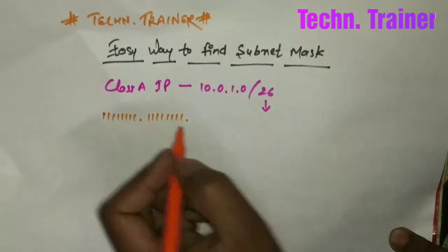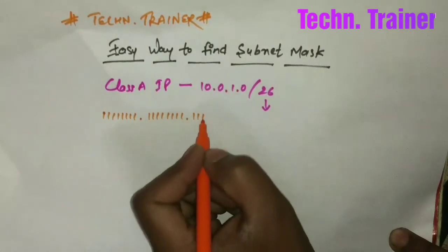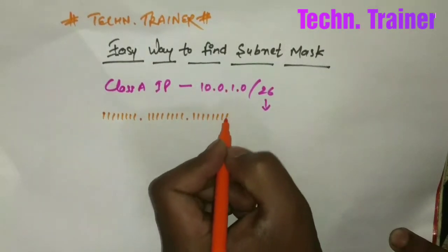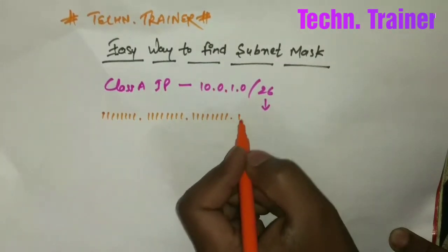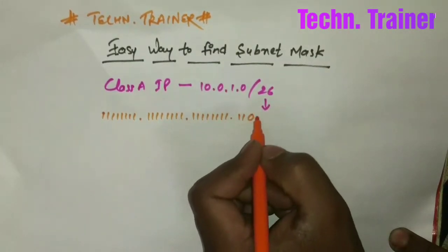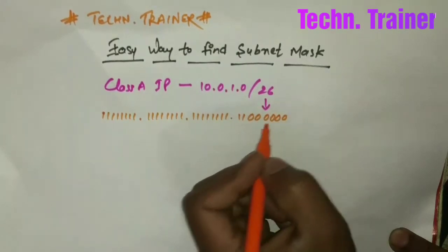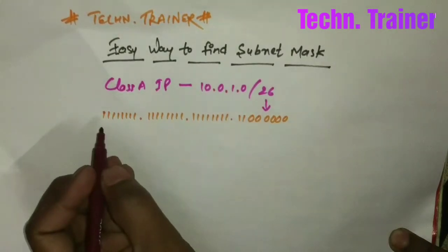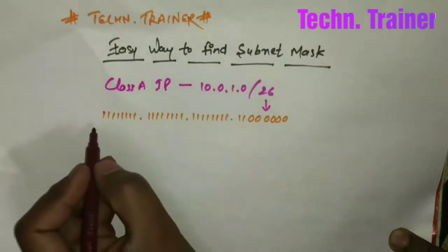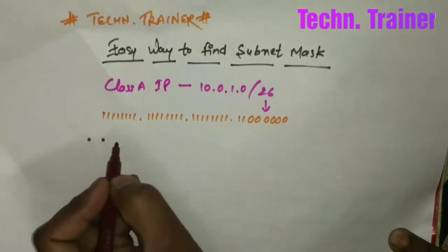So we count: 8, then 8 more makes 16, then 8 more makes 24, and then 2 more makes 26. The remaining bits are off.